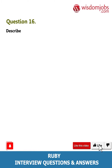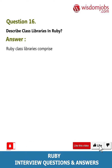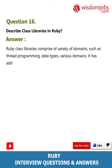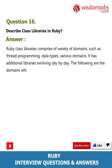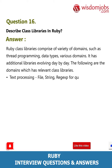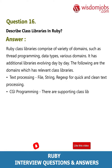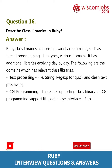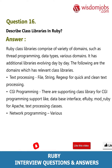Question 16: Describe class libraries in Ruby. Answer: Ruby class libraries comprise a variety of domains such as thread programming, data types, and various domains. It has additional libraries evolving day by day. The following are the domains which have relevant class libraries: text processing, file, string, regex for quick and clean text processing. For CGI programming, there are supporting class libraries such as database interface, eRuby, and mod_ruby for Apache.